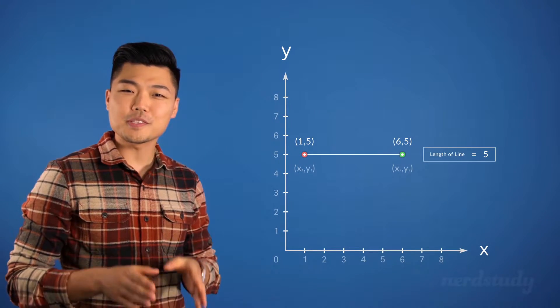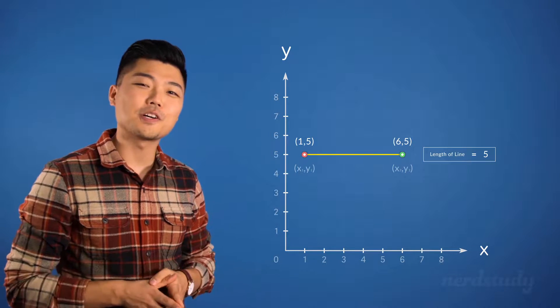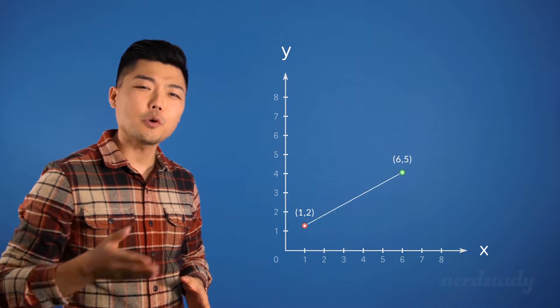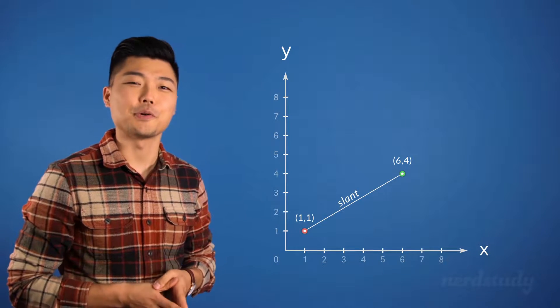We can do this because the line was perfectly horizontal. But what would we do if the line had a slope to it, or shall I say a slant to it?